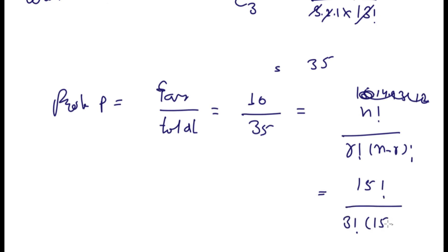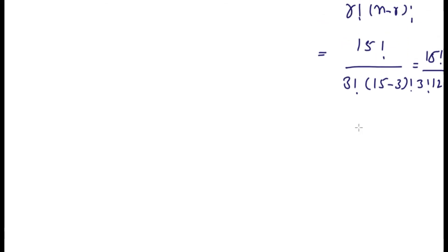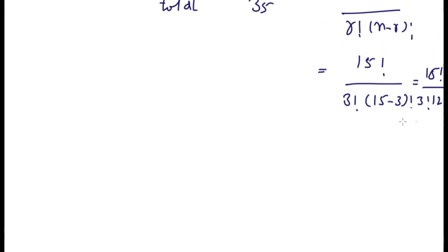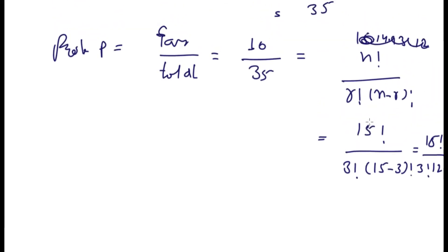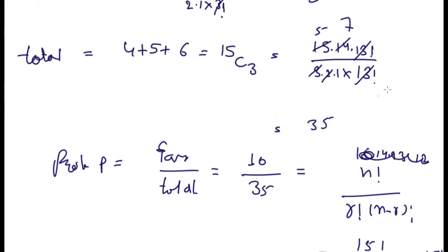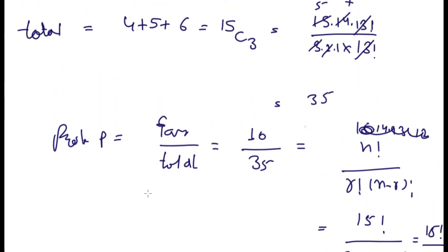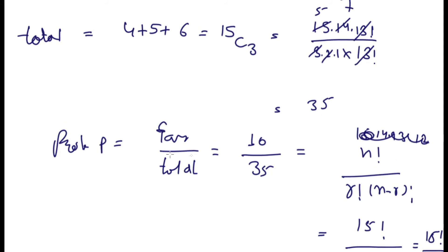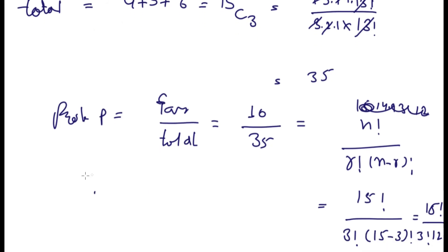And this will result in 15 factorial upon 3 factorial times 12 factorial. I made this mistake and used 13 as 12. So let me recalculate it here. So this will be 15 times 14 times 13 divided by 3 times 2 times 1.